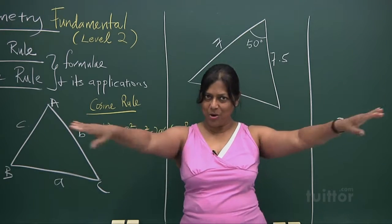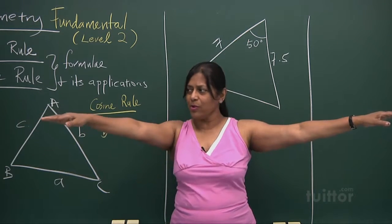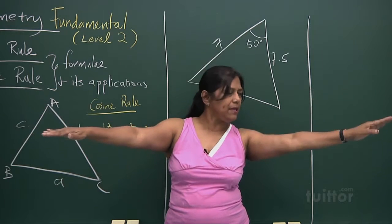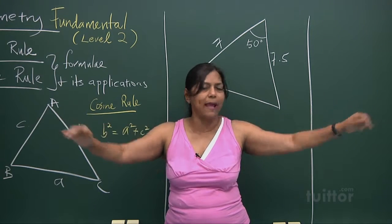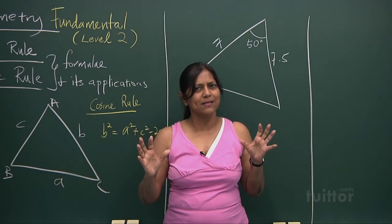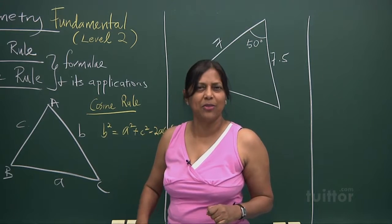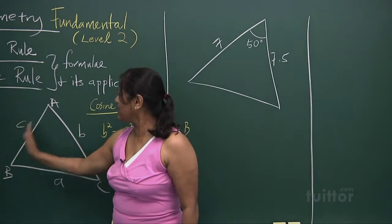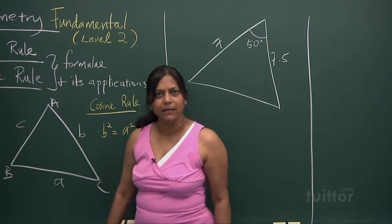If you want to find the unknown length, that unknown squared equals a squared plus b squared minus two ab times cos of the angle between them. So using the Indian dance, b squared equals a squared plus c squared minus two ac cos B.